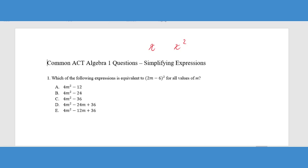So this first problem says, which of the following expressions is equivalent to 2M minus 6 squared? One of the things you need to remember about an exponent is what that means. X squared just means that's the same thing as X times X.